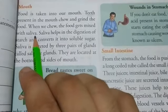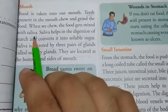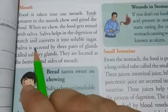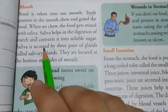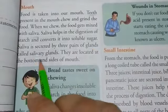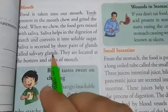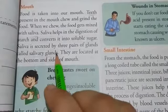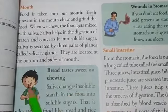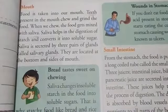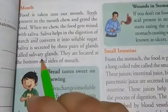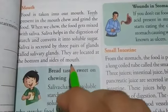Now what is saliva? Saliva is a liquid which is produced by the salivary glands present in our mouth. Saliva is secreted or released or produced by the three pairs of glands called salivary glands. These are the smaller parts of our body which release chemical substances for performing specific functions in our body. They are located at the bottom and sides of our mouth.